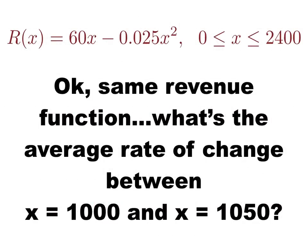So what if I had the same revenue function and I wanted to know what was the average rate of change between 1000 and 1050 car seats? Now I'm trying to figure out what is that average rate of change? Namely, on average, every time I add an additional car seat between 1000 and 1050, how much additional revenue is generated?